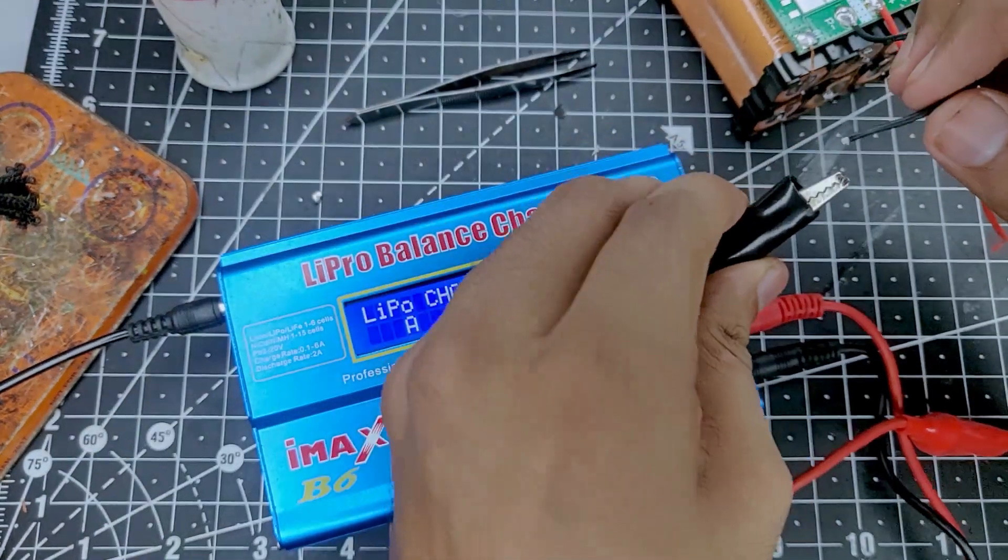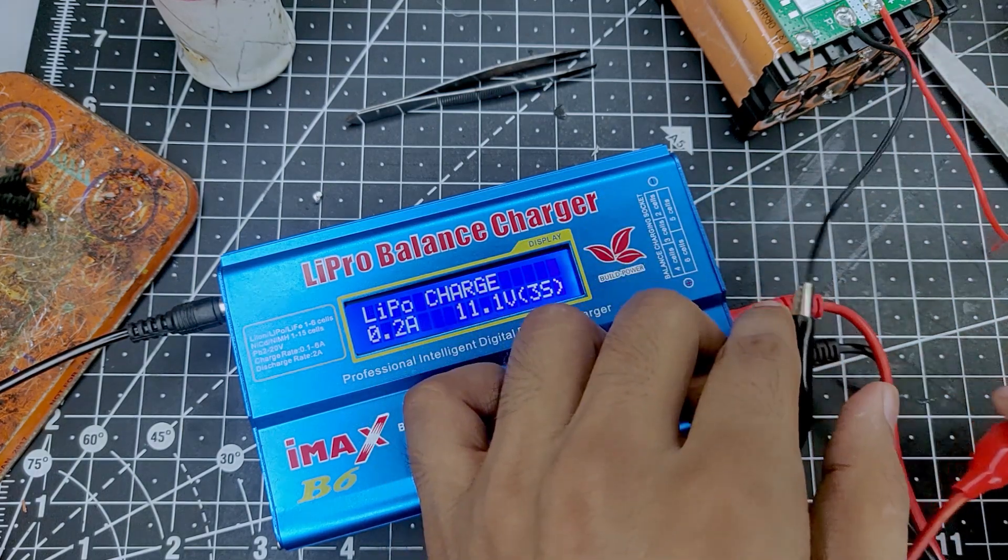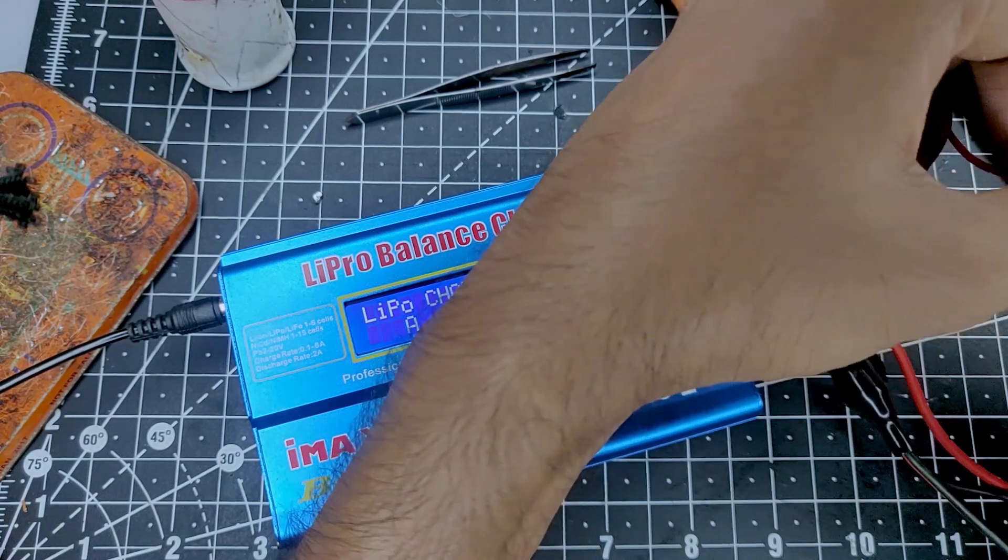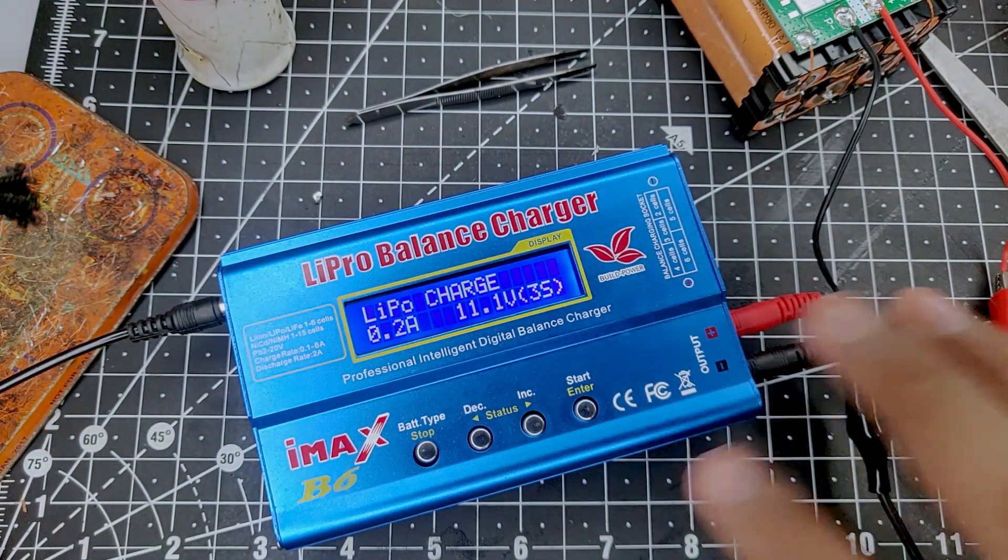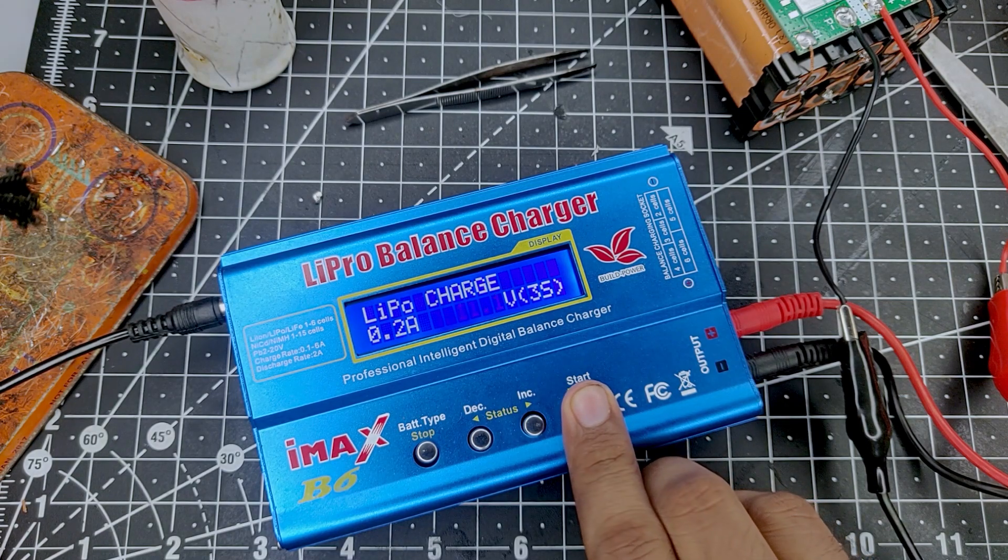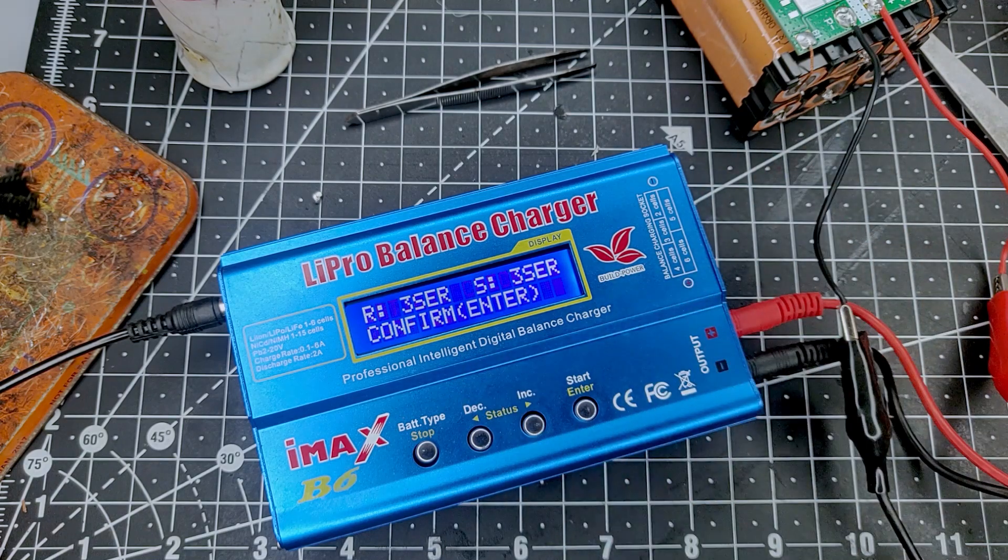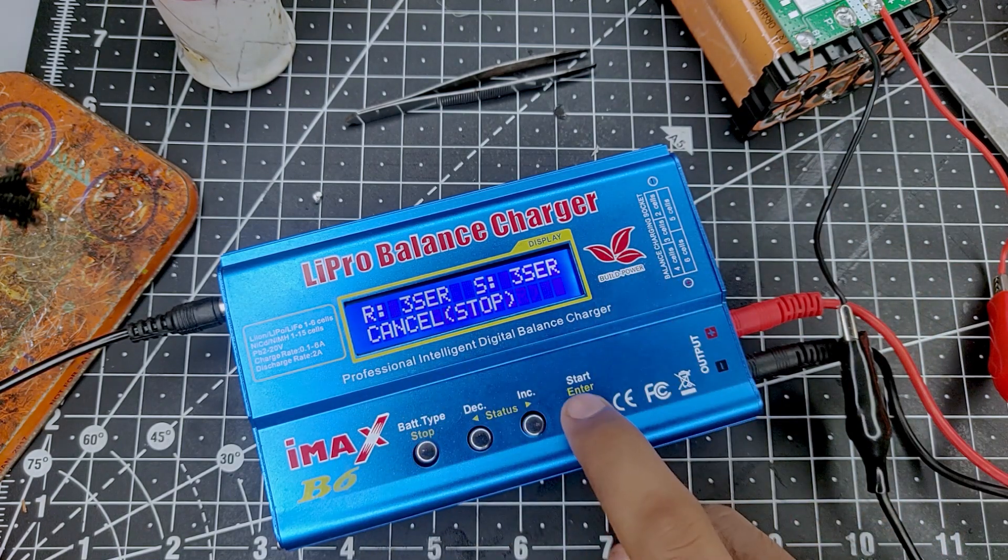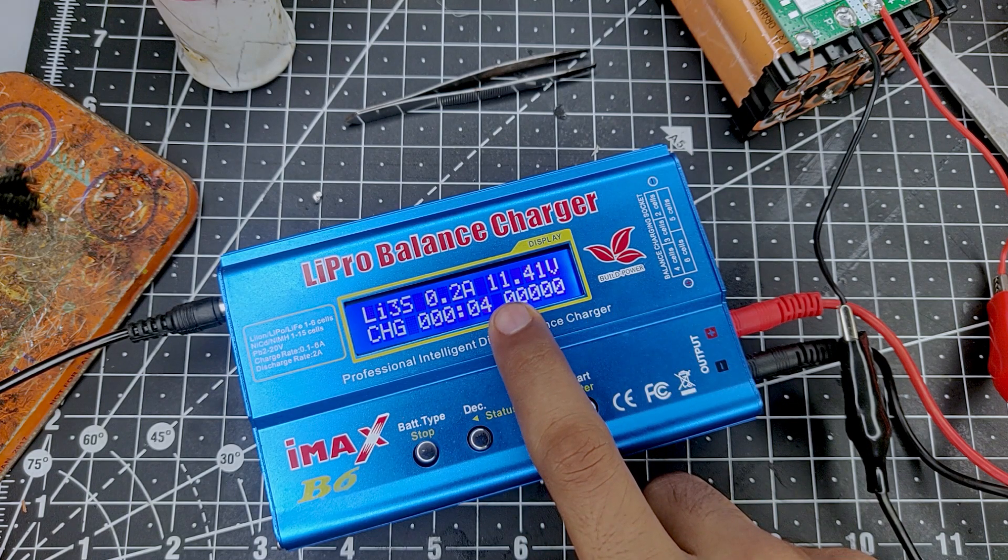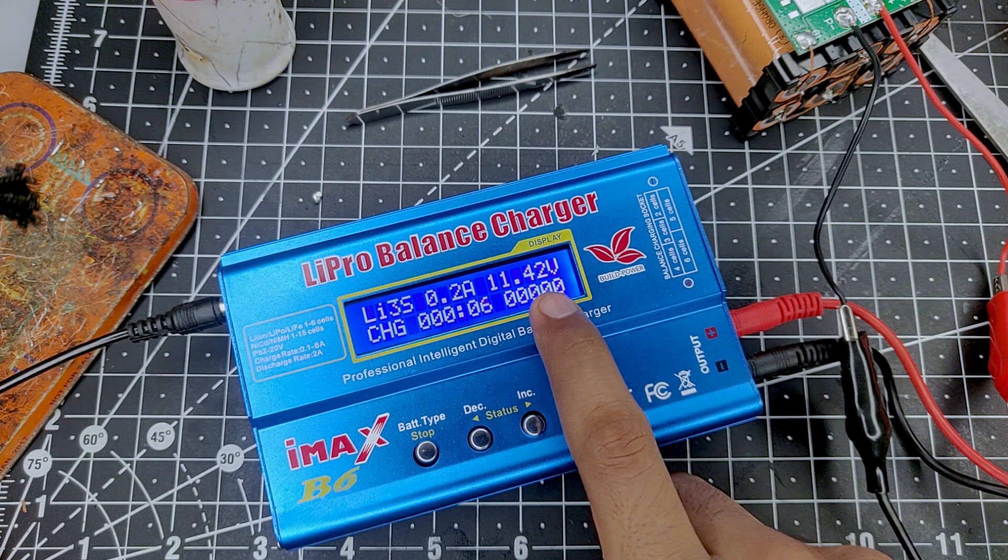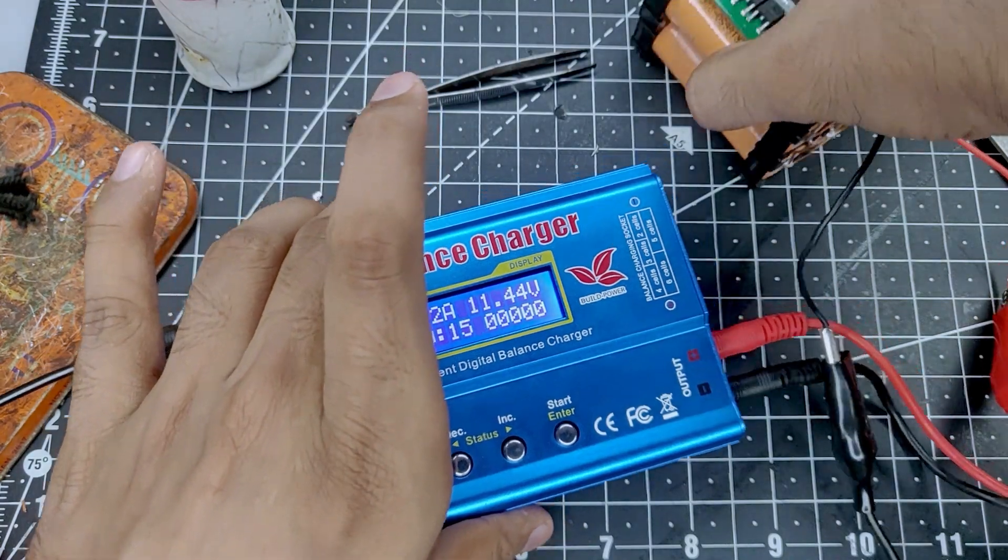After selecting all the right values, connect the battery to the charger - negative to negative, positive to positive. This is a pretty janky setup but just make sure to select everything correctly. Long press enter and it'll check the polarity first. Once everything is done, click start and it will start charging. Currently it's at 11.41 volts and going up. It will go all the way up to 12.6 and then stop charging.